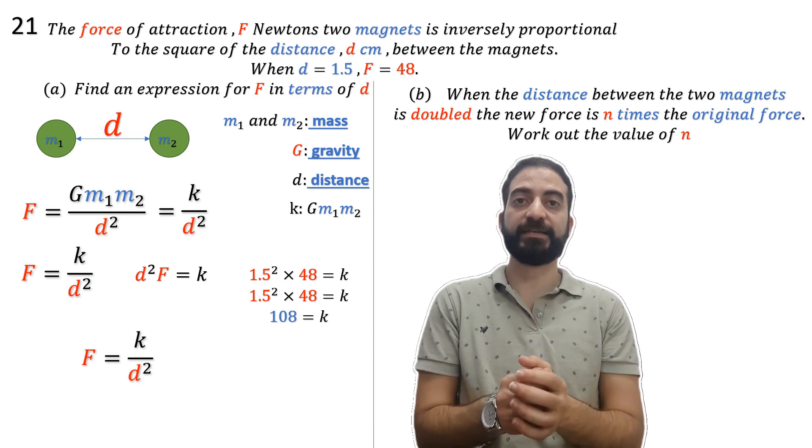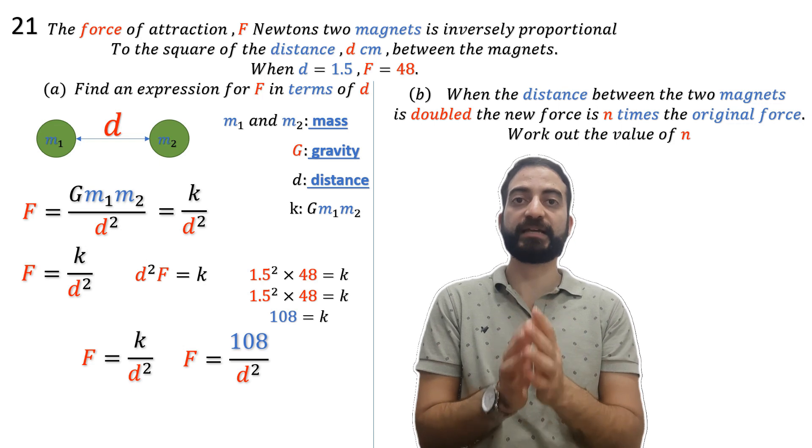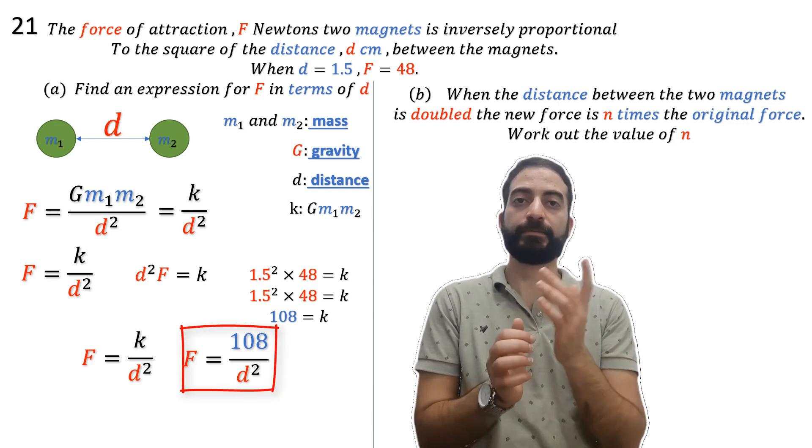After we find k, we substitute this value back into the equation to get the force in terms of d. We now move to part b.